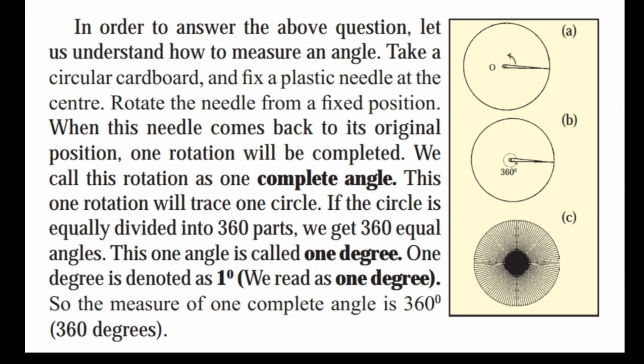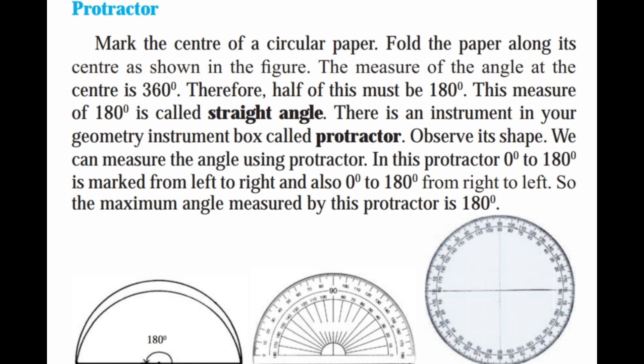When this needle comes back to its original position, one rotation will be completed. We call this rotation as one complete angle. This one rotation will trace one circle. If the circle is equally divided into 360 parts, we get 360 equal angles. This one angle is called one degree, denoted as 1°. So the measurement of one complete angle is 360 degrees.